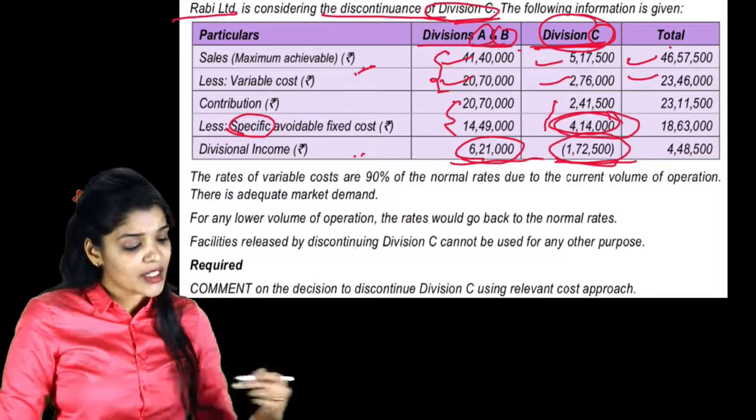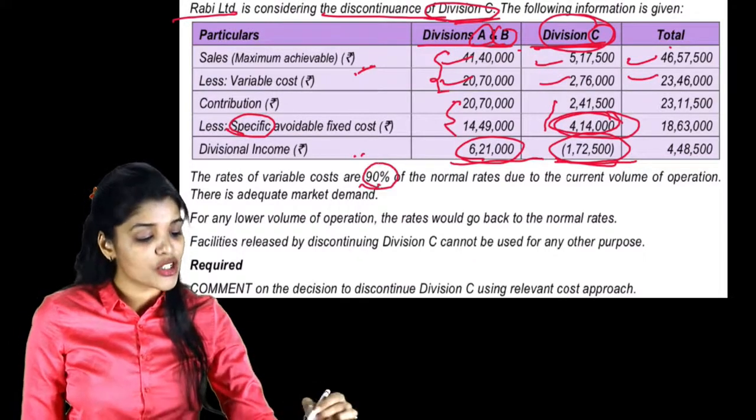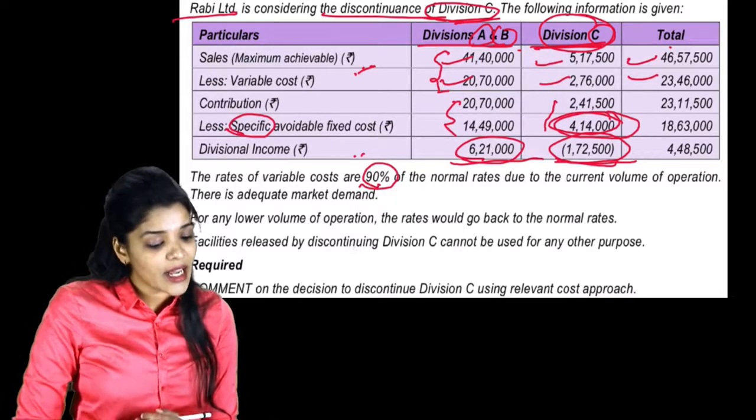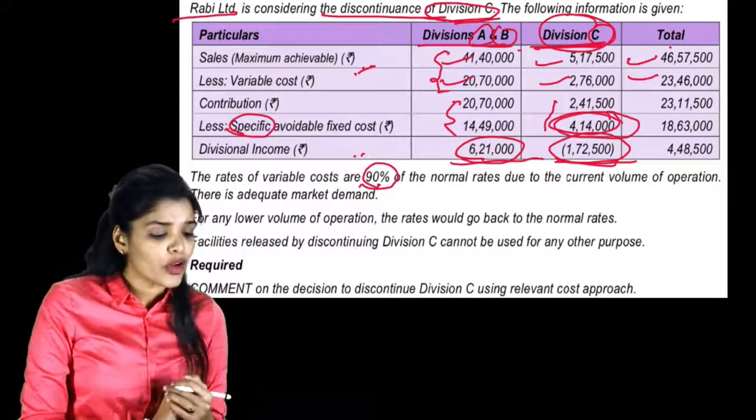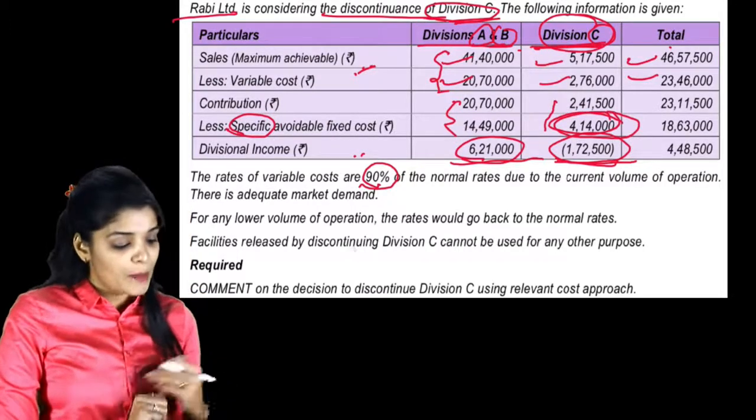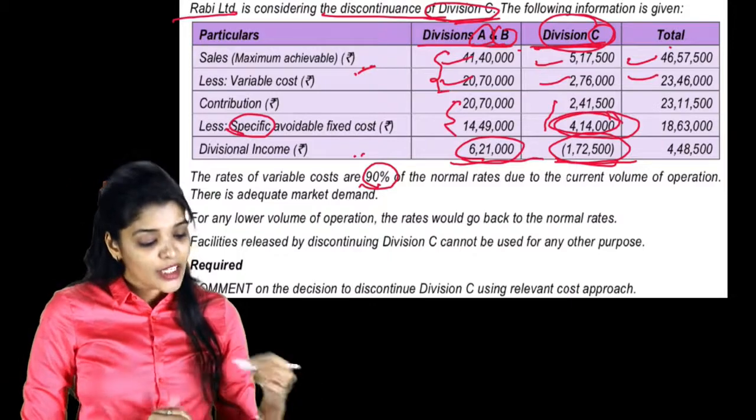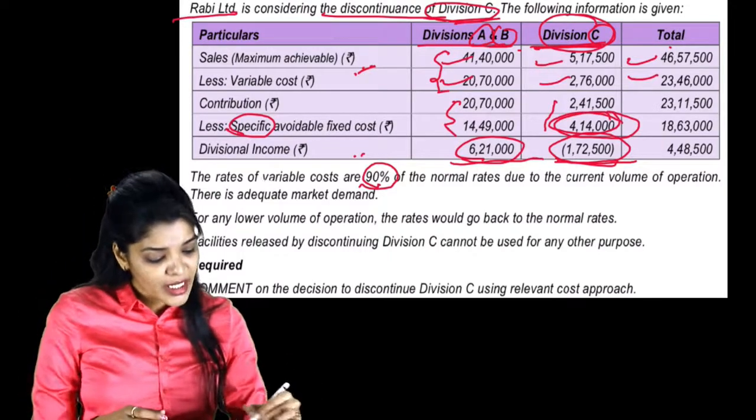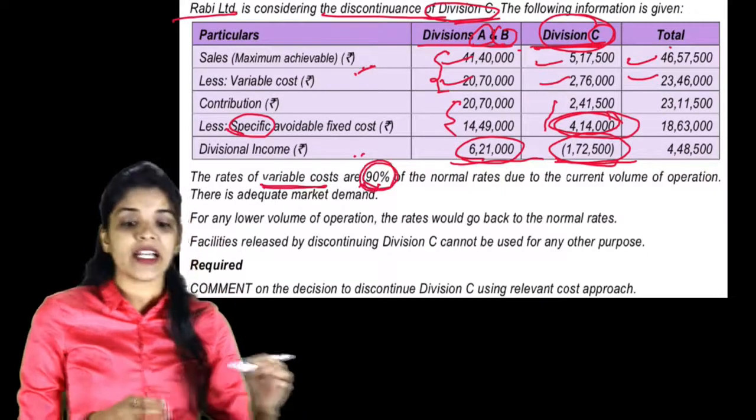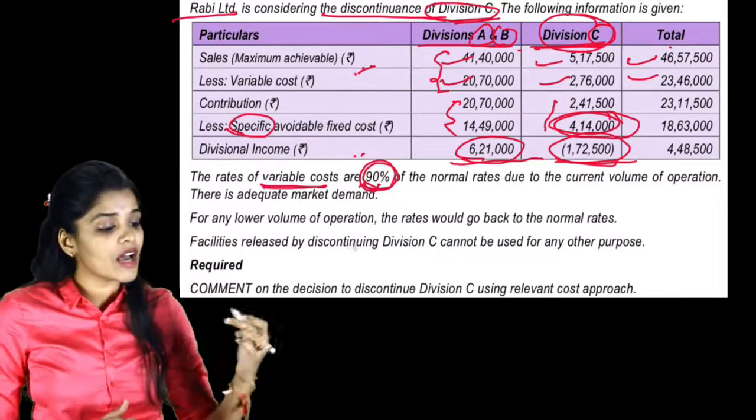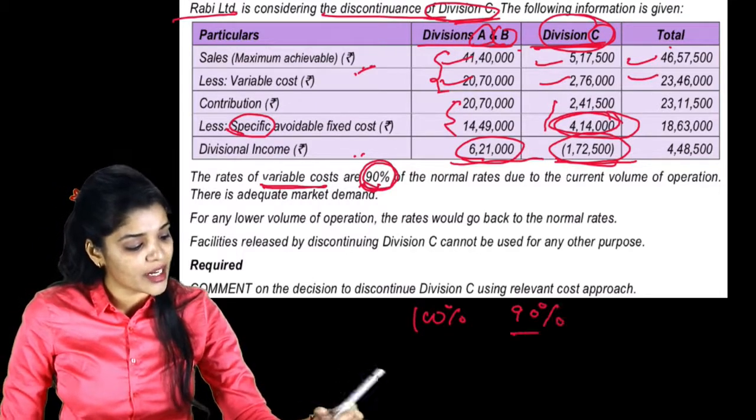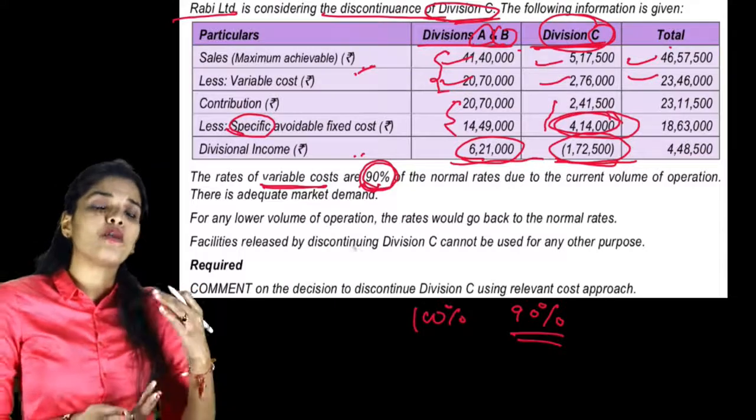The rates of variable cost are 90% of the normal rates due to the current volume of operation. There is adequate market demand. The variable cost rates are 90% of normal rate, meaning the variable cost that should be 100%, only 90% cost is being incurred because of current volume of production.